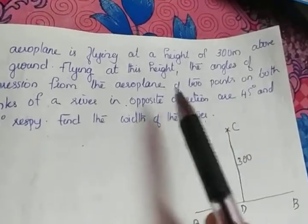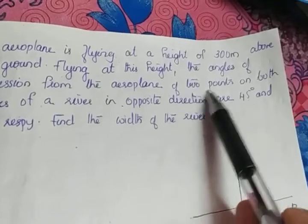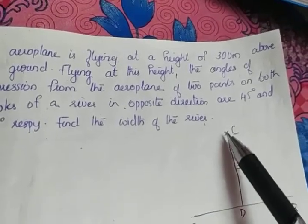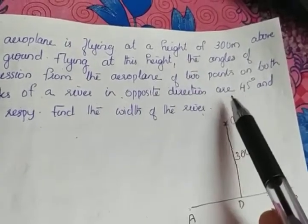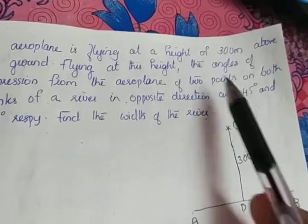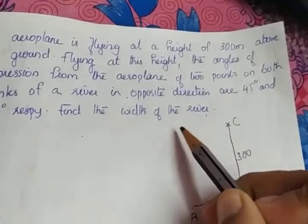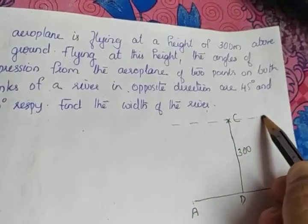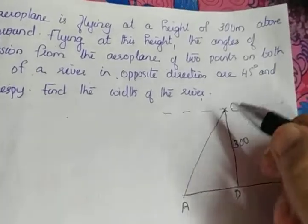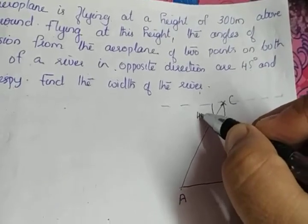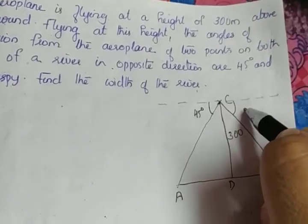Flying at this height, the angle of depression from the aeroplane of 2 points on both banks of the river — we can see 2 points on both banks, already marked as A and B. The angles of depression are given as 45 degrees and 60 degrees. For the angle of depression, the horizontal line from the aeroplane is the dotted line. The line of sight from C towards A gives one angle as 45 degrees, and the line of sight from C towards B gives the other angle as 60 degrees.